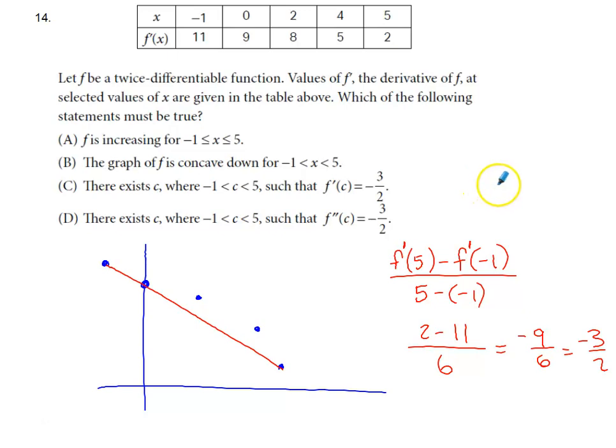Number 14 from the AP Calc AB Blue Book Test Preview. This is a calculator question, although the calculator isn't all that helpful here. It says we've got a twice-differentiable function, values of f prime. So that would be the derivative of f. Selected values of x are in the table above, which of the following statements must be true.